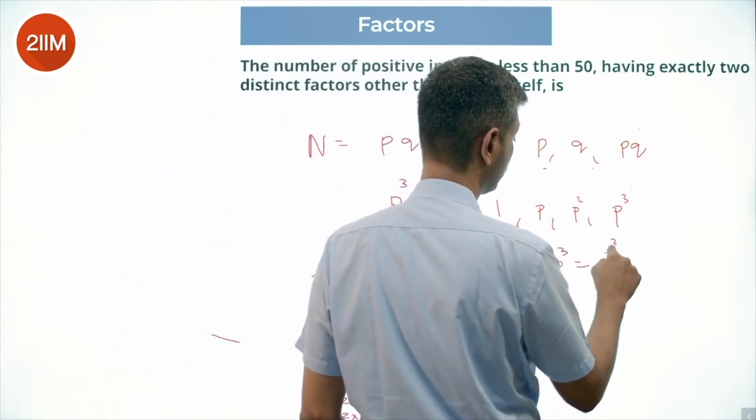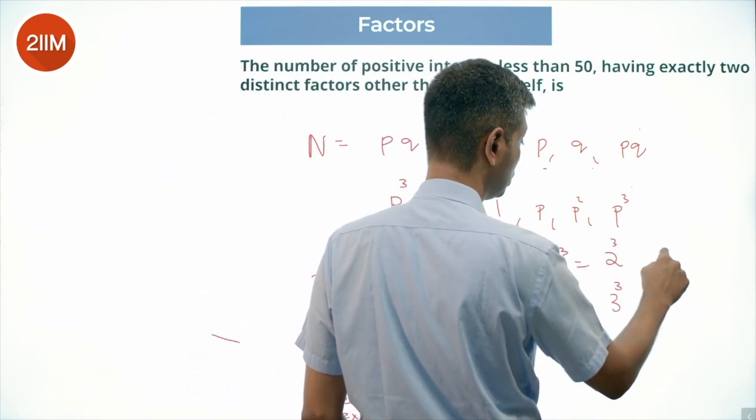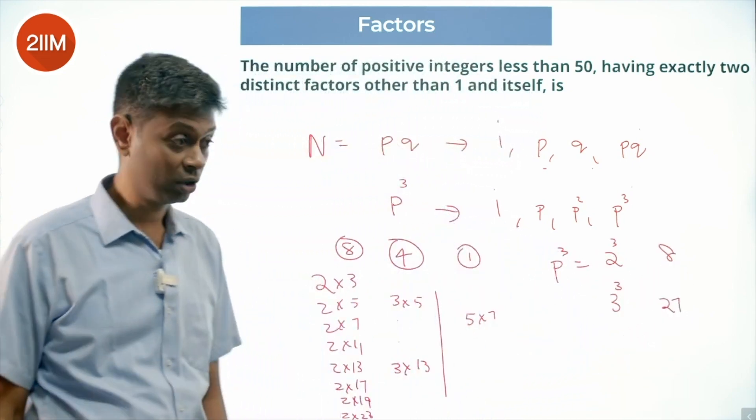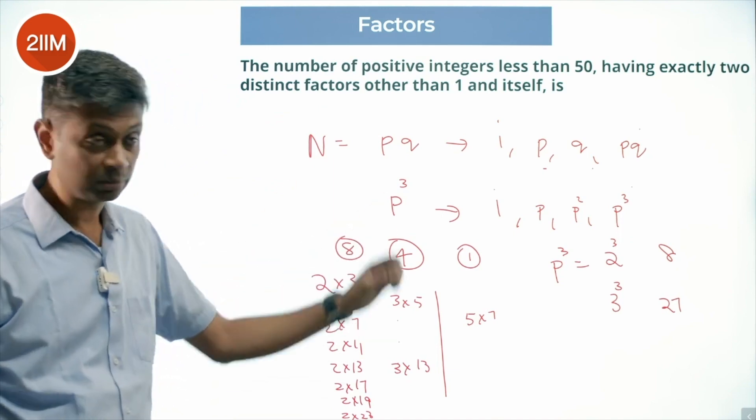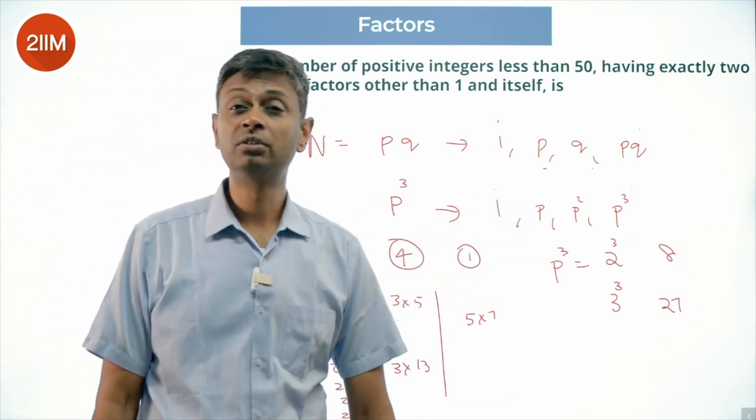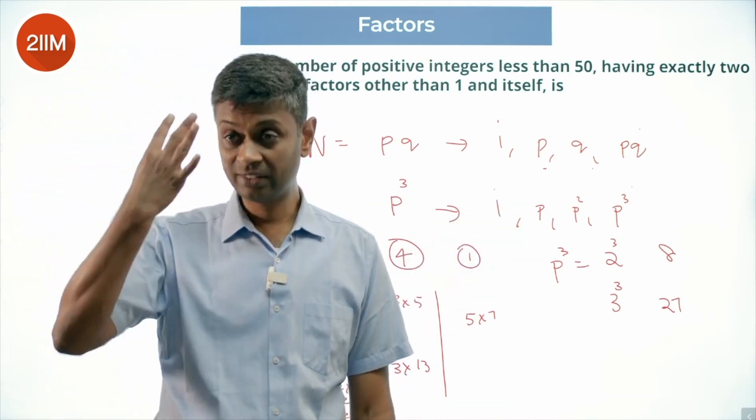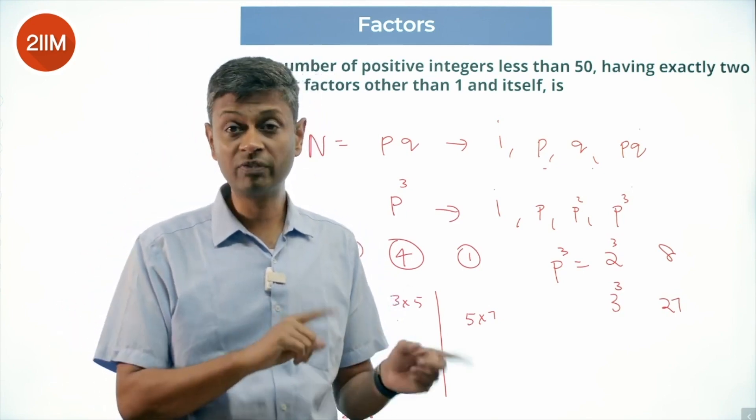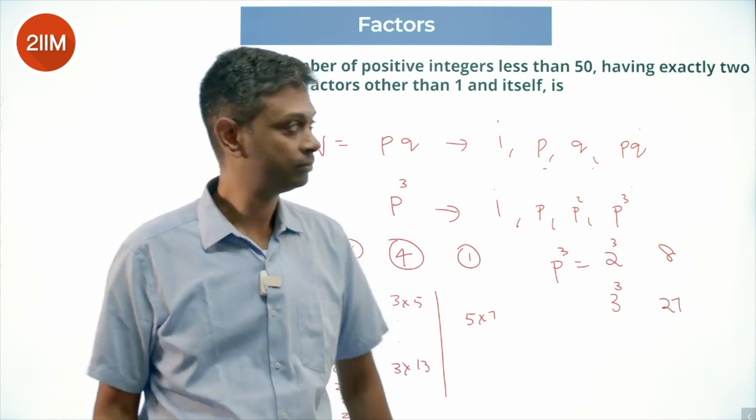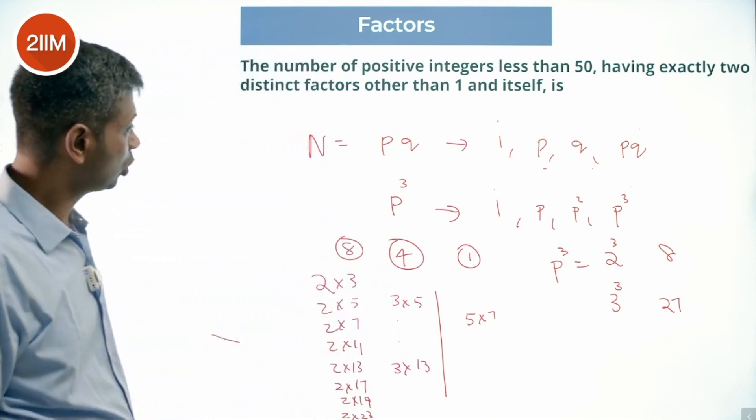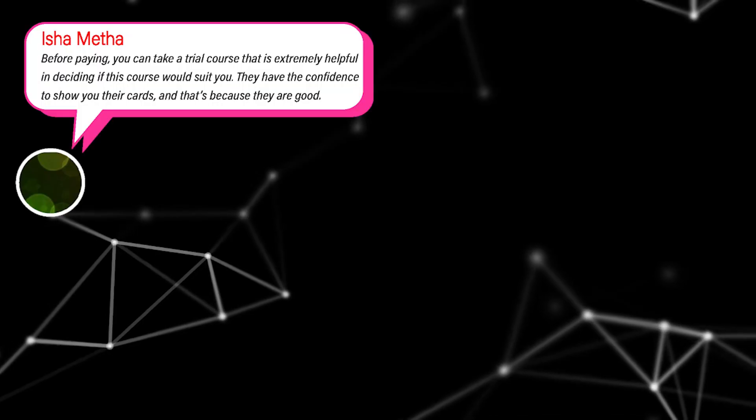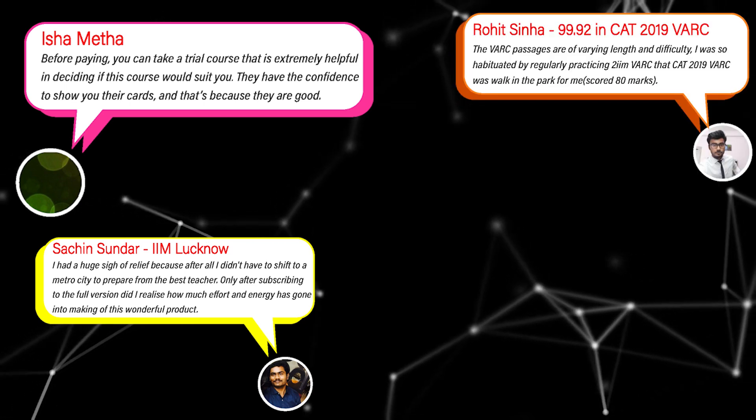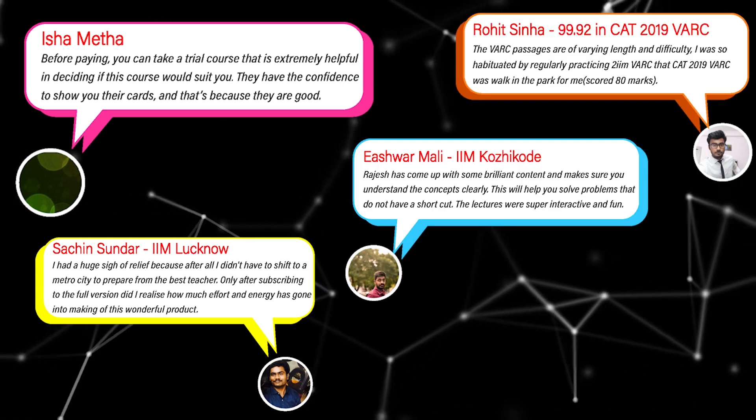It could be 2³, could be 3³—this is 8, this is 27. 5³ is 125, I don't worry about it. So these 13 numbers plus those two numbers, 15 numbers totally will have a total of four factors, or two distinct factors apart from one and itself. Totally 15 numbers.